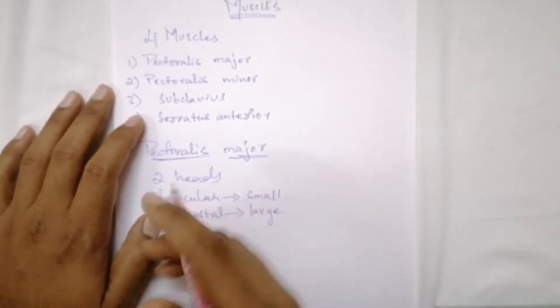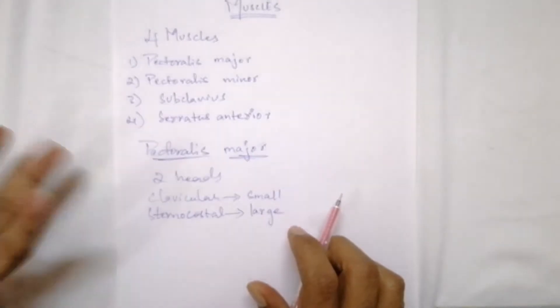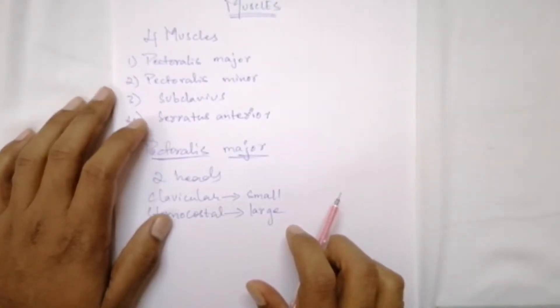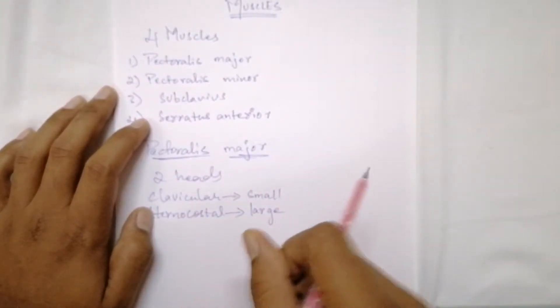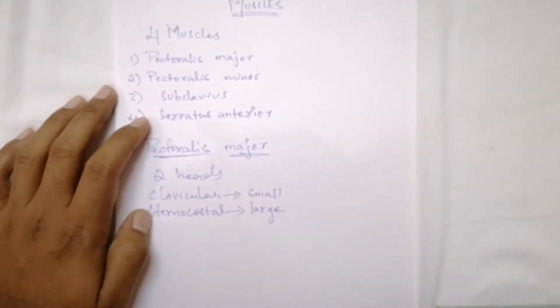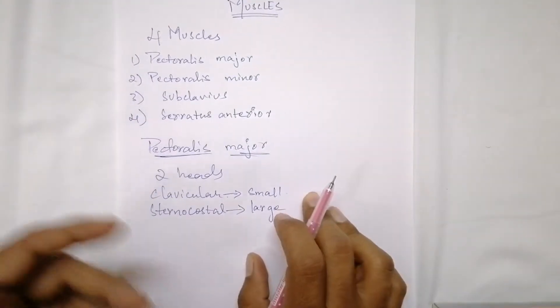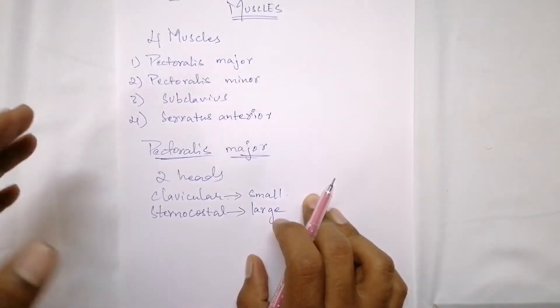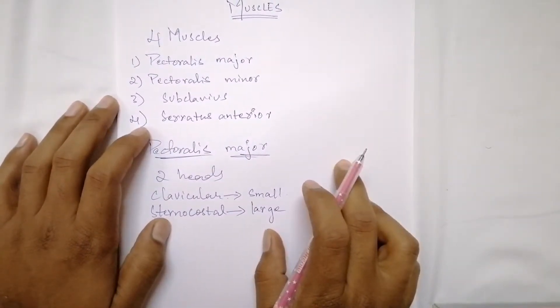The main actions of pectoralis major are powerful adduction of the arm and medial rotation of the humerus when both heads act together. The clavicular head mainly helps in powerful adduction of the arm, and the sternocostal head helps in extension of the adducted arm.